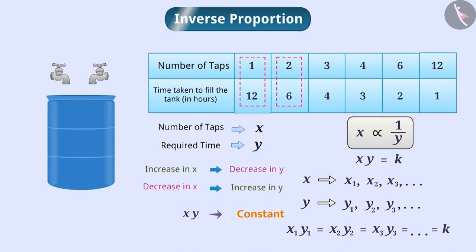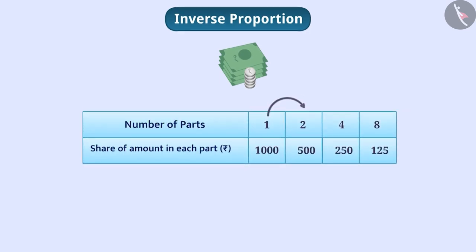Let's look at some of the day-to-day conditions where inverse proportions occurs. If a certain amount of money is to be divided, there will be a proportionate decrease in the amount of money in each part with the increase in the number of parts. In this way, the number of parts and the amount in each part will be inversely proportional.